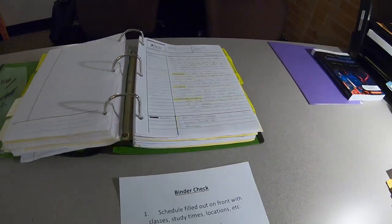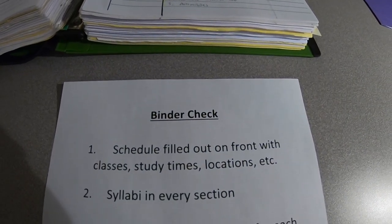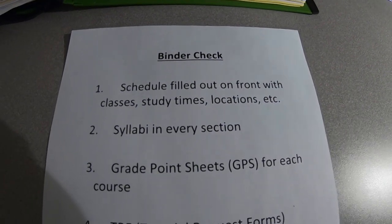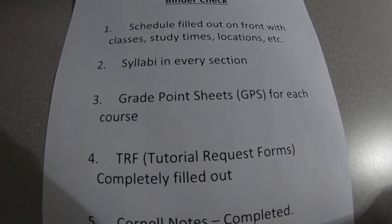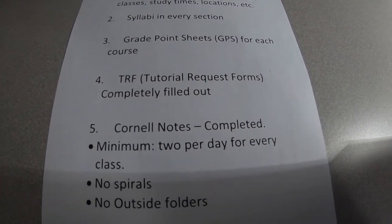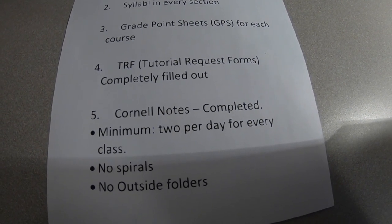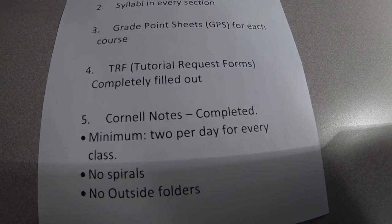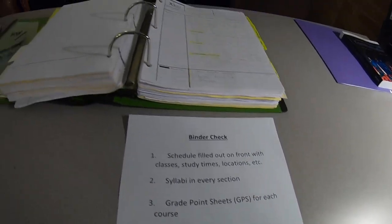So let's recap real quick. For a binder check: the schedule should be filled out on the front with classes, study times, locations, etc. Syllabi in every section should be the first thing they see. Grade point sheets — the GPS — for each course should be filled out with grades. You should see quite a few Tutorial Request Forms; they do this on a weekly basis in AVID. Cornell notes — completed — at least two pages a day for every class is just the minimum amount; there could be quite a few more. No spirals, no outside folders — everything goes in this binder.